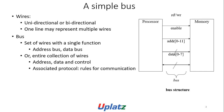A simple bus diagram shows the structure of address and data bus. The data bus is 8 bits wide, and the address bus is 12 bits wide. Wires can be unidirectional or bidirectional. The address bus is unidirectional; the data bus can be both. One line may represent multiple wires. A bus is a set of wires with a single function — address bus, data bus — or an entire collection of wires including address, data, and control with associated protocols for communication among them.